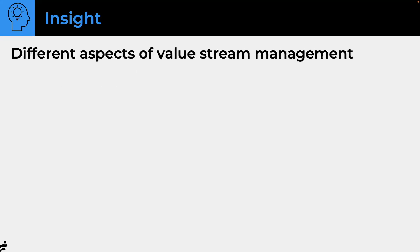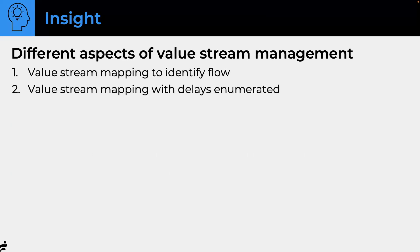There are different aspects of value streams — mapping to see where things are going, enumerating delays, or a generic value stream view. This is a way to see what's going on in a very short period of time. My whole view of this really comes from an external consultant's or internal change agent's perspective. As a consultant, you might have maybe four days and that's it — you have to make change quick or see what's going on quickly so they'll bring you back.